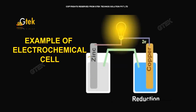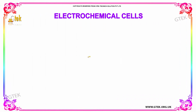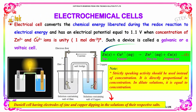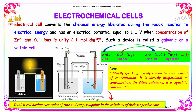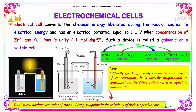Example of an electrochemical cell. Electrical cells convert the chemical energy liberated during the redox reaction to electrical energy, and has an electrical potential equal to 1.1 volt, when the concentration of zinc 2+ and copper 2+ ions is unity — 1 mole per decimetre cube. Such a device is called a galvanic or voltaic cell.